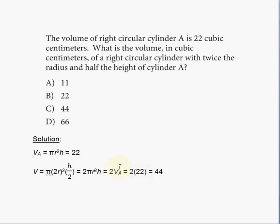Because we substituted the V, the volume of cylinder A with 22. And we're going to have 2 times 22. And that's 44. So the correct answer choice is C.